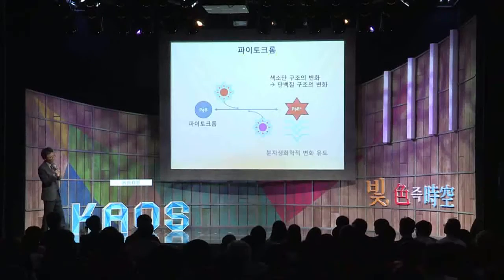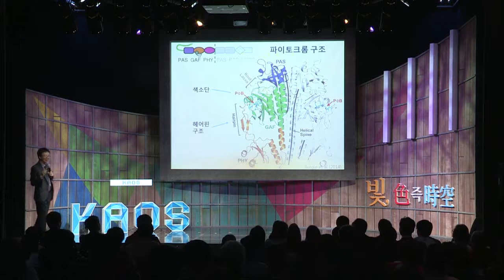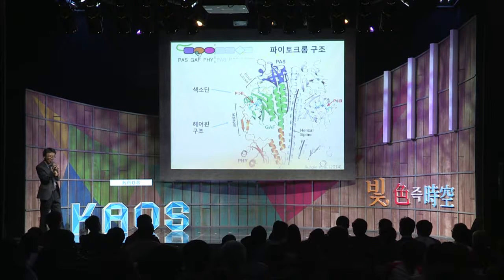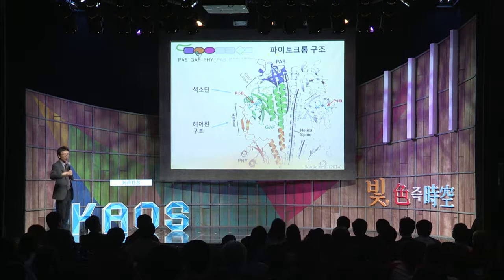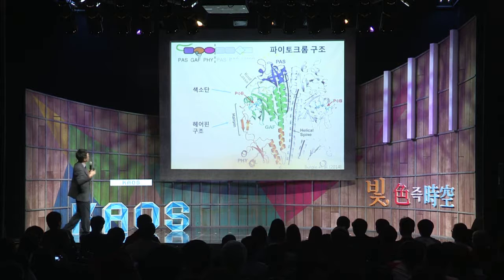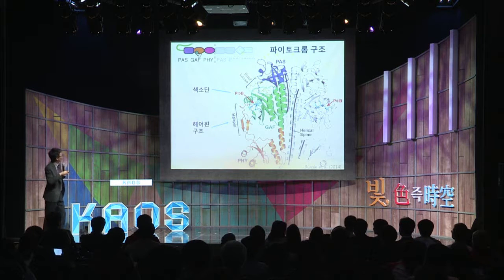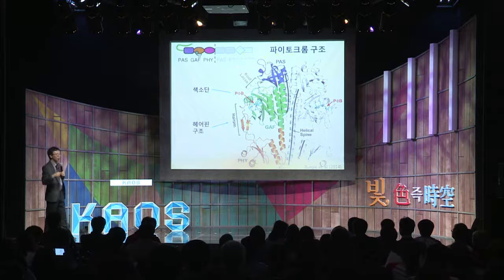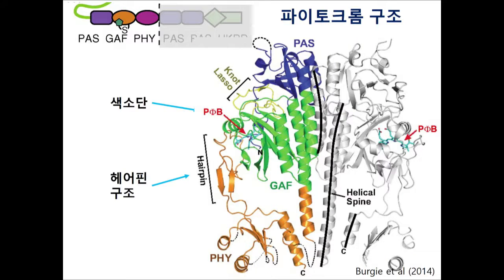이제 좀 더 어려운 이야기를 하겠습니다. 그 조그만 물질이 오르락내리락, 오른쪽으로 돌았다 왼쪽으로 돌았다 하는 게 어떻게 단백질 구조 변화로 바뀔까, 사람들이 연구를 했는데요. 이것은 파이토크롬 단백질의 구조를 보이고 있습니다. 엑스선 회절 방법을 사용해서 찾았는데, 파이토크롬이 대충 이런 형태를 가지고 있어요. PAS 도메인은 청색으로, GAF 도메인은 녹색으로, PHY 도메인은 주황색으로 보이고 있고, GAF 도메인에 색소단이 하늘색으로 표시되어 있습니다.